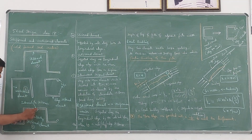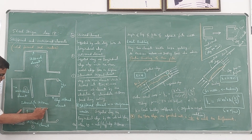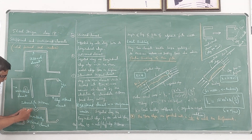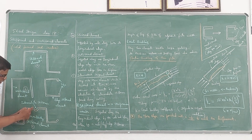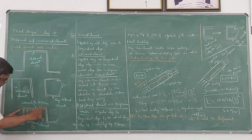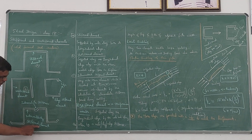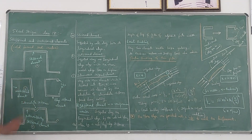If the length of this element is very large, then you can provide an intermediate stiffener in this fashion. Then this element becomes an intermittently stiffened element.